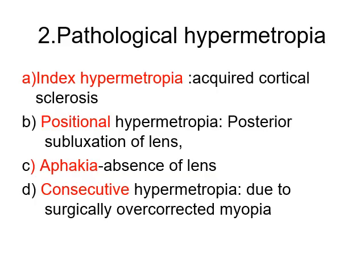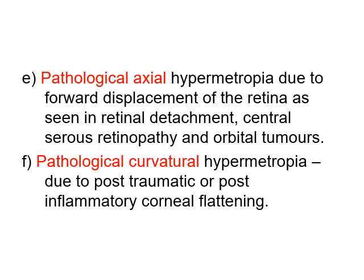Pathological hypermetropia includes: index hypermetropia due to acquired cortical sclerosis; positional hypermetropia due to posterior subluxation of the lens; aphakia meaning absence of the lens; consecutive hypermetropia due to surgically overcorrected myopia; pathological axial hypermetropia due to forward displacement of the retina as seen in retinal detachment, central serous retinopathy, and orbital tumors pressing over the retina from behind; and pathological curvature hypermetropia due to post-traumatic or post-inflammatory corneal changes, where corneal ulcer or trauma alters the curvature.